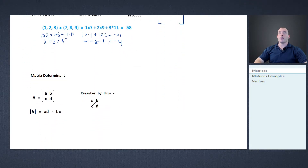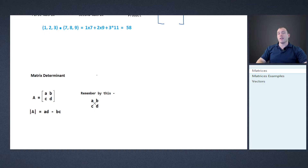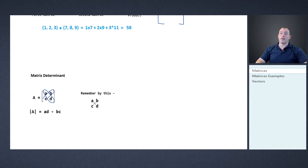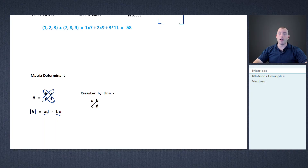Now we have matrix determinants — the last part you need to know. You don't need to know what it's used for, just how to find it. They'll usually give you the formula on the test, but in case they don't: think of it like cross multiplying two ratios in a proportion. You multiply diagonally and subtract — so it's a times d minus b times c. That's the formula for the determinant.